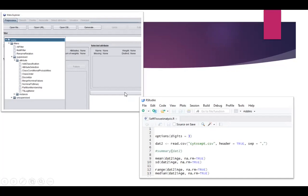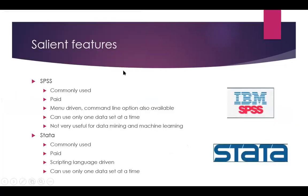Both are statistical software packages — WEKA is for data mining and machine learning, and R is a general statistical software. Now the salient features of SPSS: it is a commonly used, paid statistical software package. It is menu-driven, though a command line option is also available. However, it can use only one dataset at a time, and it is not very useful for data mining and machine learning. Otherwise, it is a powerful software for statistics.